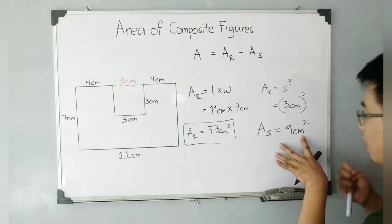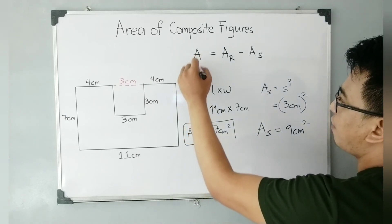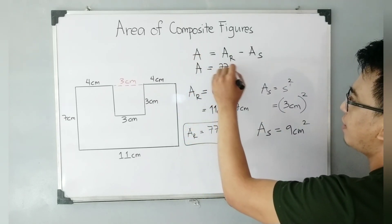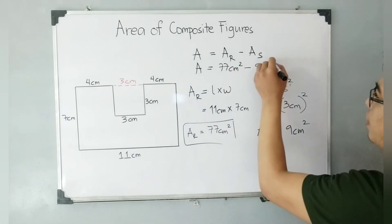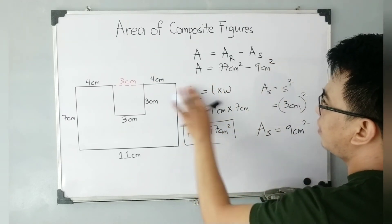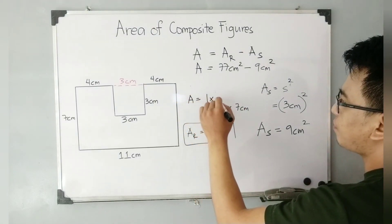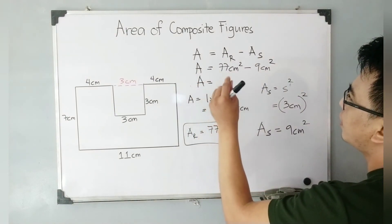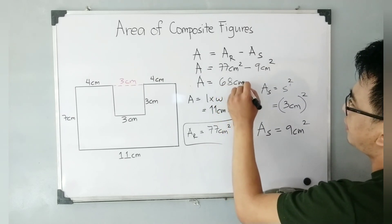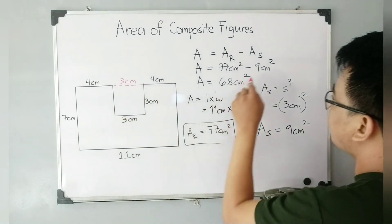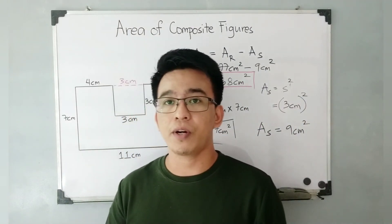To calculate the final area, I need to subtract the area of the square from the area of the rectangle. That is: area equals 77 centimeters squared minus nine centimeters squared, and that gives us the answer of 68 centimeters squared. That is the area of the whole figure.